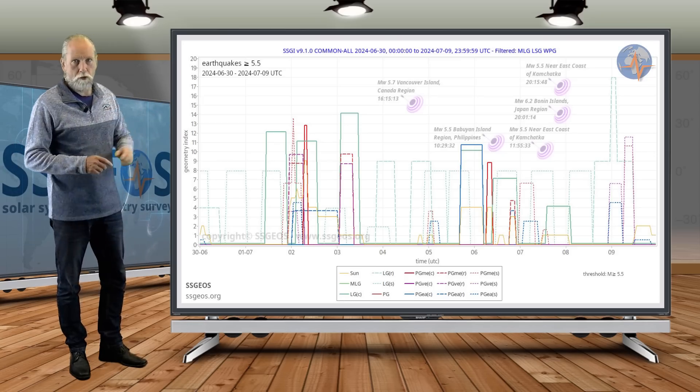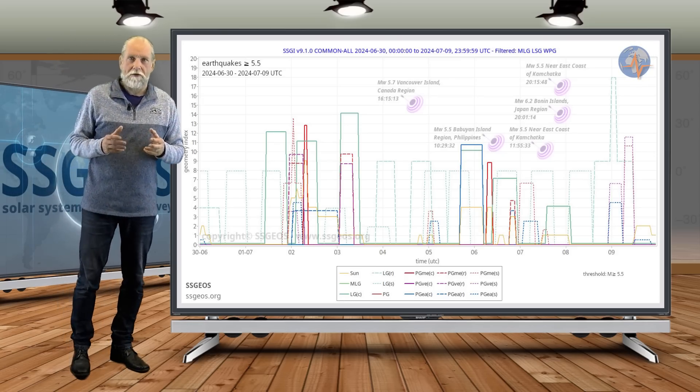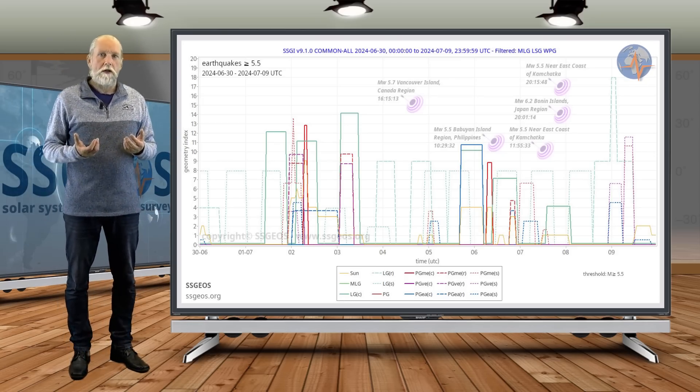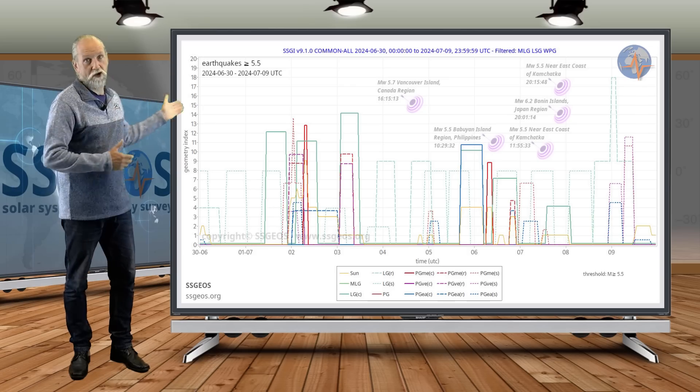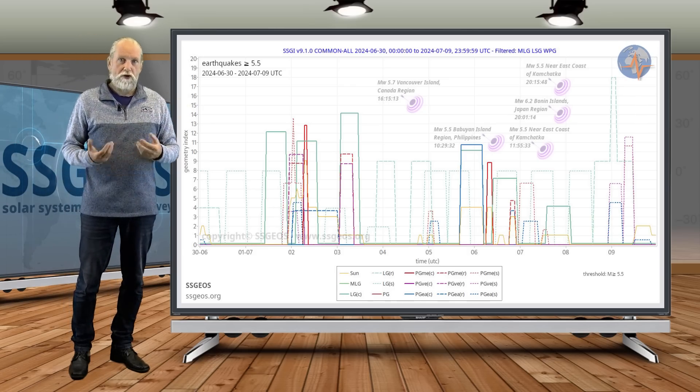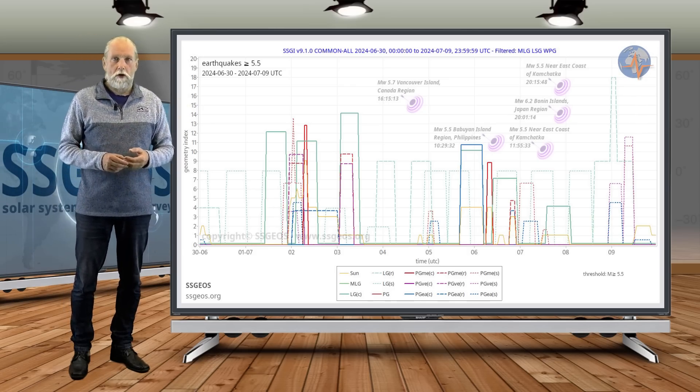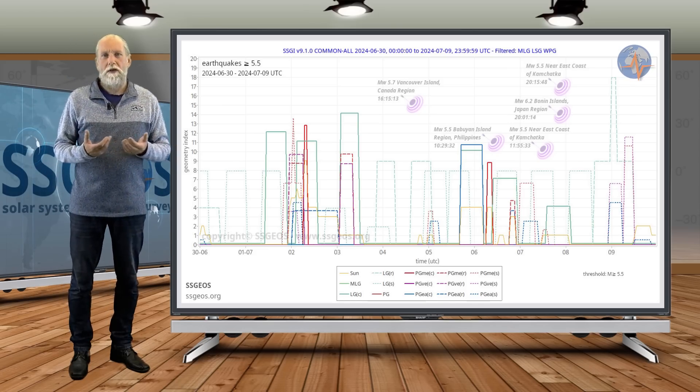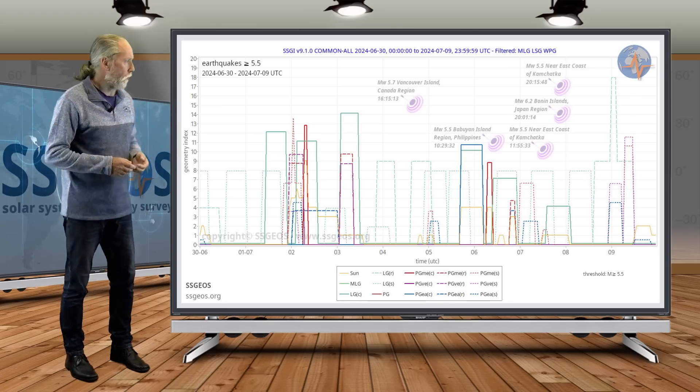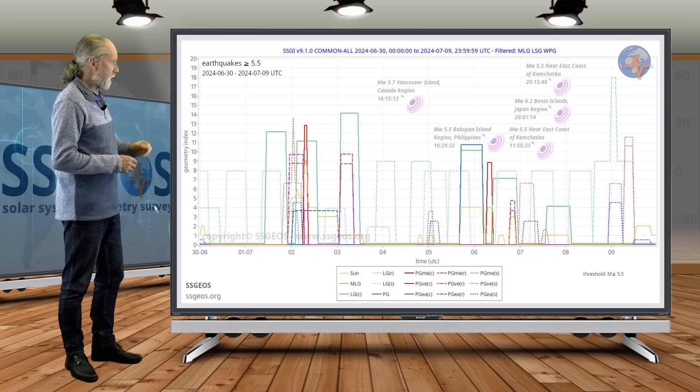This obvious clustering of strong earthquakes, that's a clear sign that there is this relationship between planetary geometry, critical planetary geometry as depicted here by this SGI graph, and larger seismic activity. The larger earthquakes, typically what we indicate is 5.5, 5.6, that's what we use as a threshold, and that's what we see here on the SGI graph.